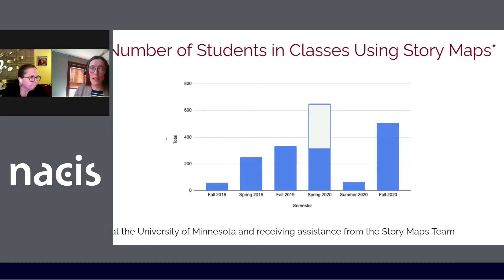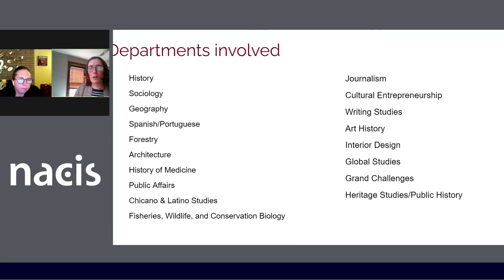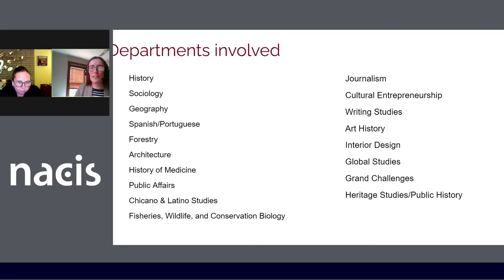Over the past two years, our team has seen a steady increase in classes asking for help with storymaps, from just a handful of classes in the fall of 2018 to about 17 classes and around 500 students this semester. Even with the disruption of the pandemic, there's still been a lot of interest. These storymaps are being used for assignments in a wide variety of departments, from fisheries to art history. Many of our faculty are from disciplines in which mapmaking and spatial thinking aren't usually emphasized. For the rest of the presentation, we are going to tell you about a few success stories, as well as some advice about how to design and carry out a storymap assignment.